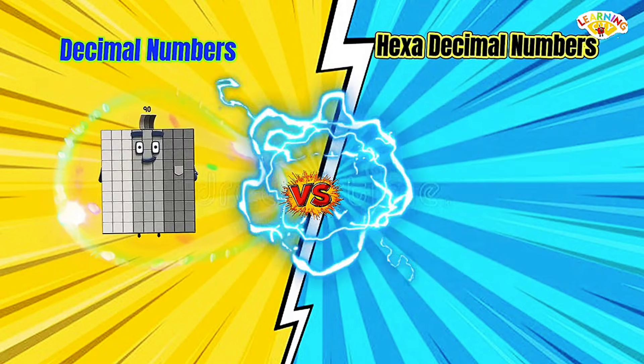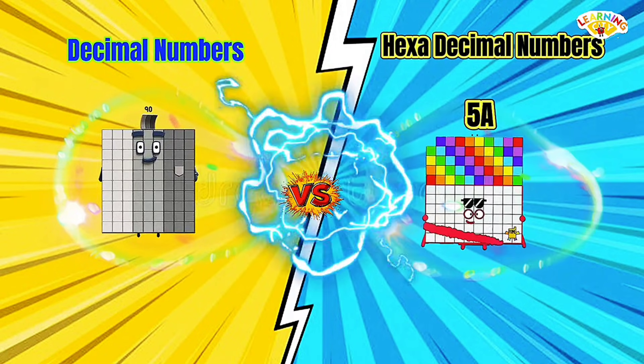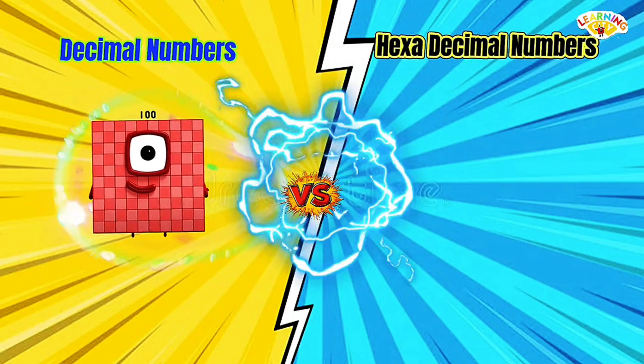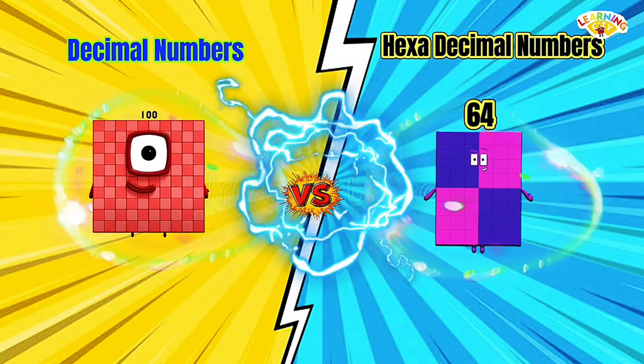Decimal 90 equals hexadecimal 5A. Decimal 100 equals hexadecimal 64.